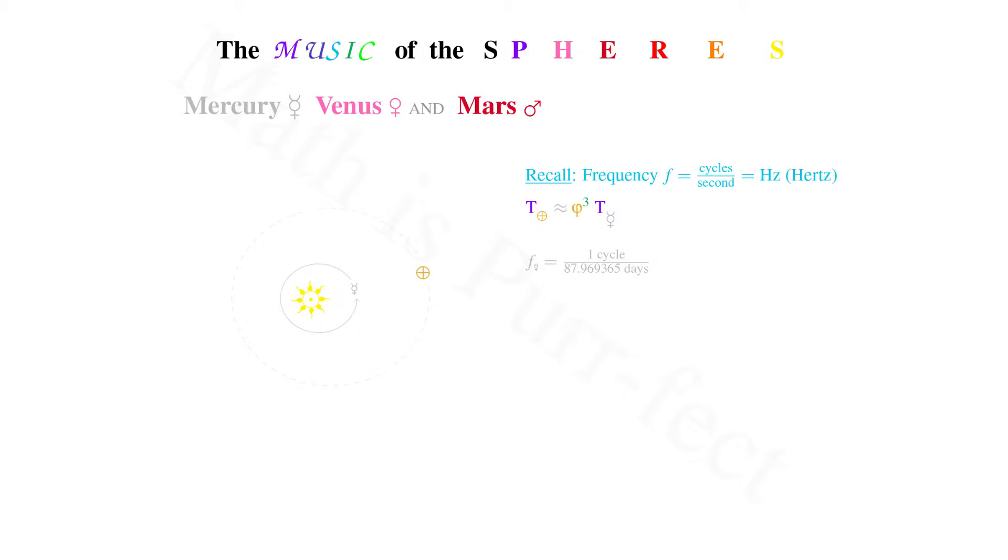Calculating the frequency of Mercury, we first translate days into hours, followed by hours into minutes, and then minutes into seconds. Reducing the units of days, hours, and minutes leaves us with a frequency of one cycle every 7,600,533.136 seconds, or 1.31 times 10 to the negative 7th hertz. In order for this to be audible, we need to raise it up 30 octaves. Hence, we multiply the frequency through by 2 to the 30th power. What results is a frequency of 141.2715371 hertz, or approximately a C sharp.